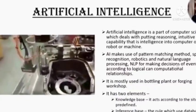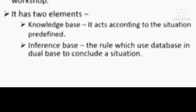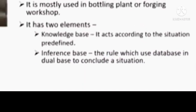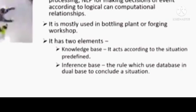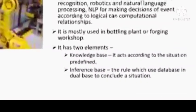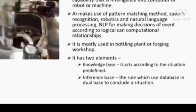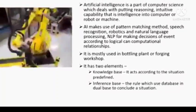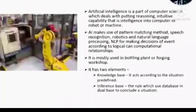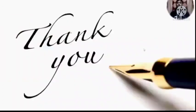Now we come to our last topic, artificial intelligence, AI. Artificial intelligence is a part of computer science which deals with putting reasoning and innovative capability — that is, intelligence — into computers, robots, or machines. AI makes use of pattern matching, speech recognition, robotics and natural language processing (NLP) for making decisions according to logical and computational relationships. It is mostly used in bottling plants or forging workshops. It has two elements: knowledge base, which acts according to predefined situations; and inference base, where rules using the database can conclude a situation. With this slide, our topic is complete.